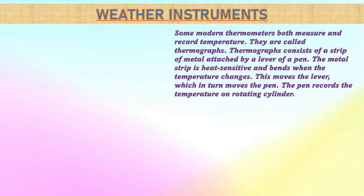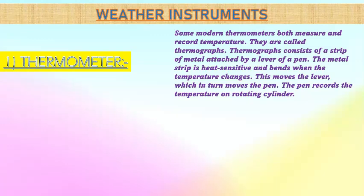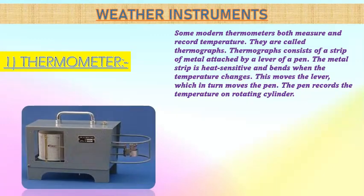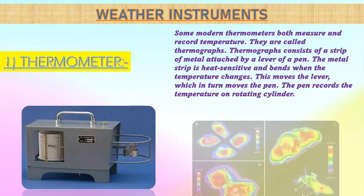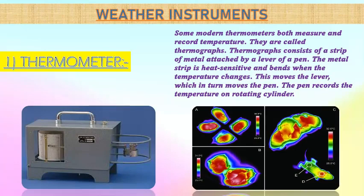Now we will know about thermographs. Some modern thermometers both measure and record temperature — they are called thermographs. A thermograph consists of a strip of metal attached by a lever to a pen. The metal strip is heat-sensitive and bends when the temperature changes. This moves the lever, which in turn moves the pen, and the pen records the temperature on a rotating cylinder.